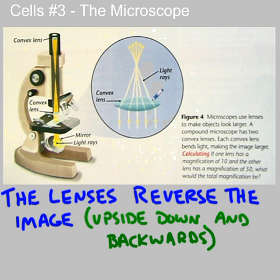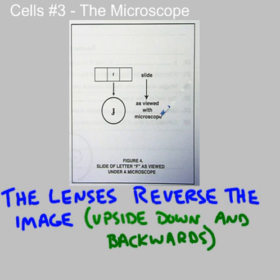It's also important to note that the way the lenses bend the light actually ends up reversing the image. The lenses reverse the image, so it's going to be both upside down and backward. When you try to center an image in the field of view, if you want the image to move to the left, you need to move the slide to the right. If you need the image to move down, you need to move the slide up — everything is reversed. Here, the letter F is placed on the slide right side up and normal, and you can see what the image looks like in the microscope: it is both upside down and backwards.